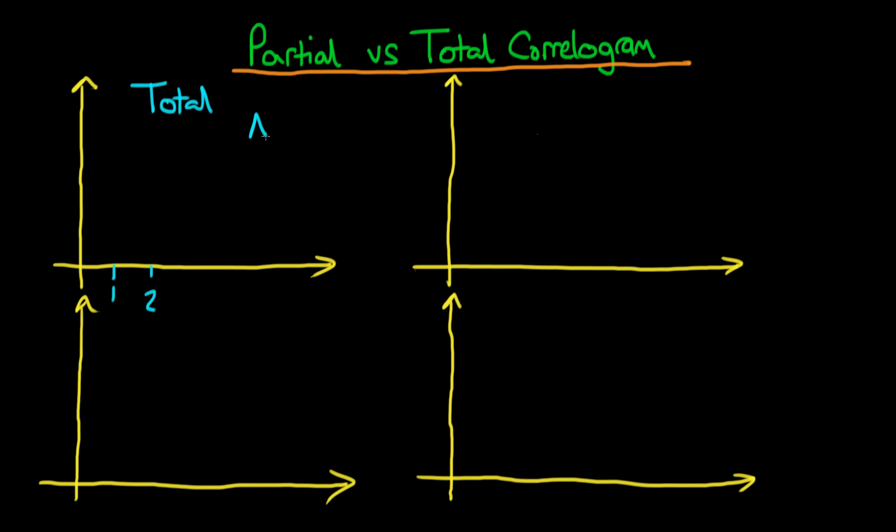I'm going to draw what a correlogram will look like for an AR1 process up here and down here what it will look like for an MA1 process. The x-axis specifies the number of lags and the y-axis specifies the correlation of the series XT with itself lagged, and the lag is determined by the x-axis.